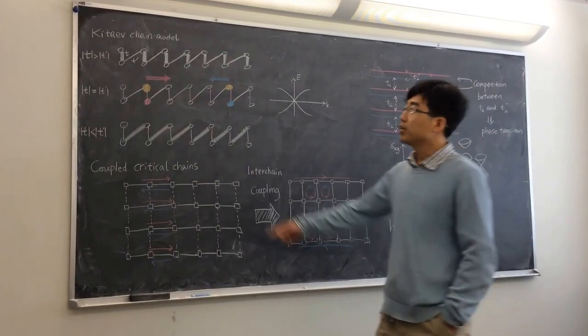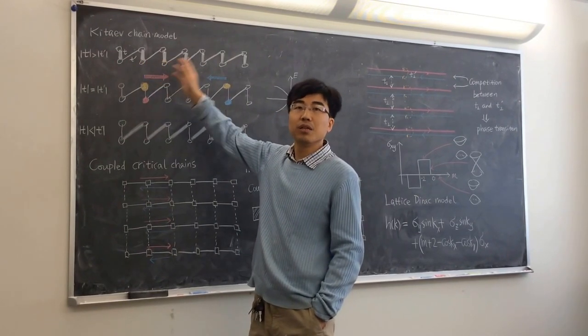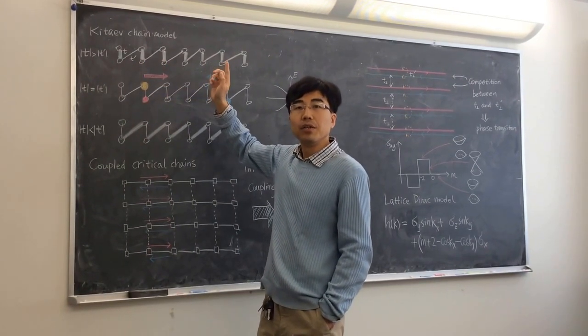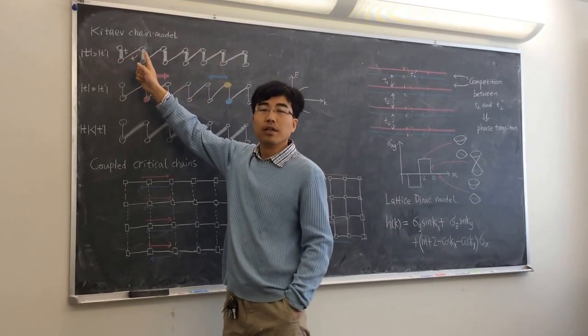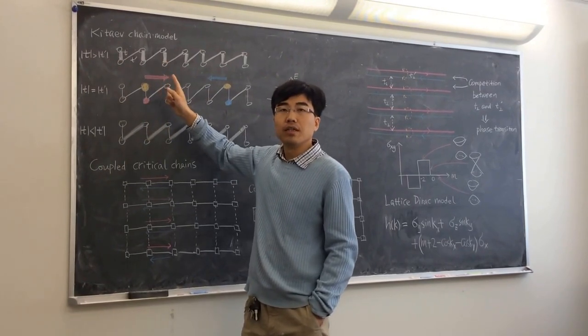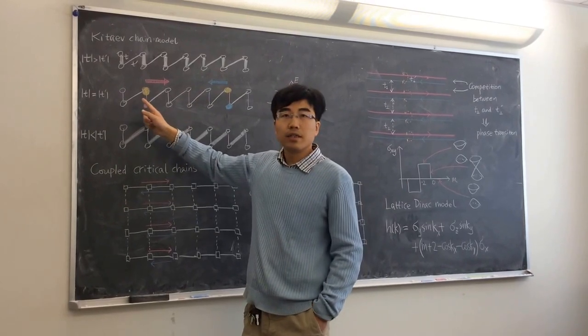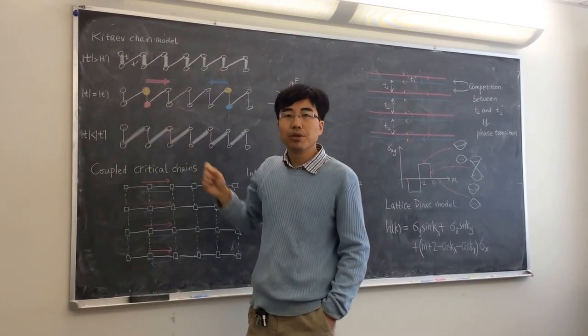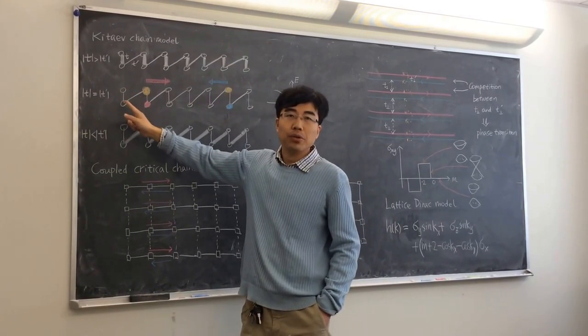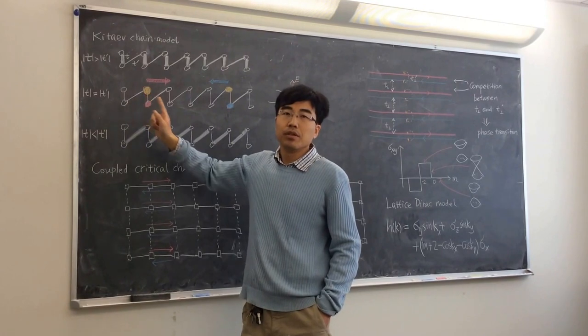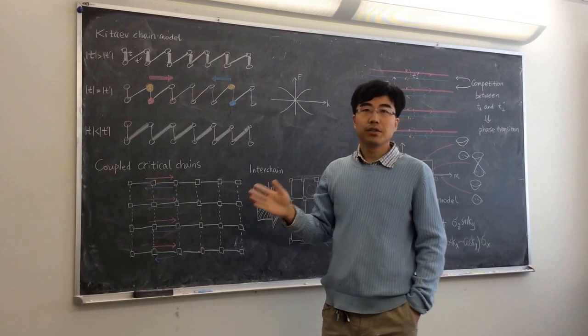Let's start from this familiar Kitaev chain. I have drawn the chain in a zigzag way, but it's the same one-dimensional chain you have seen before. You know that depending on whether the even-odd-bond or the even-bond is stronger, there are two phases. There is this trivial phase and the topological phase, depending on this dimerization. Now, let's consider the phase transition point between the two, which happens when you have the hopping from site 1 to 2 the same as the hopping from site 2 to 3. That's the case where the hopping is completely uniform and the chain is at its critical point.